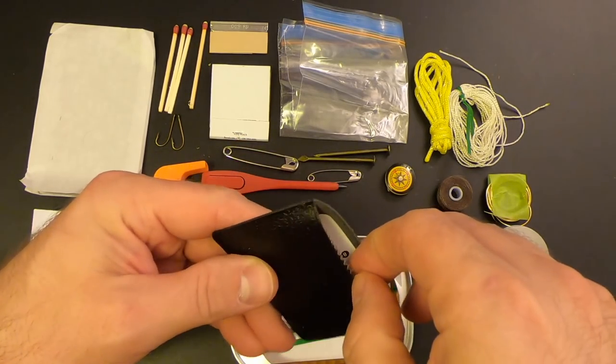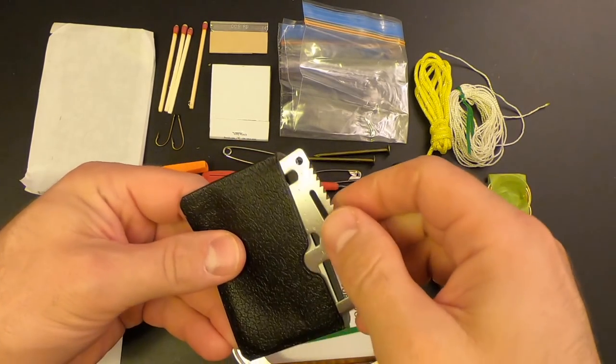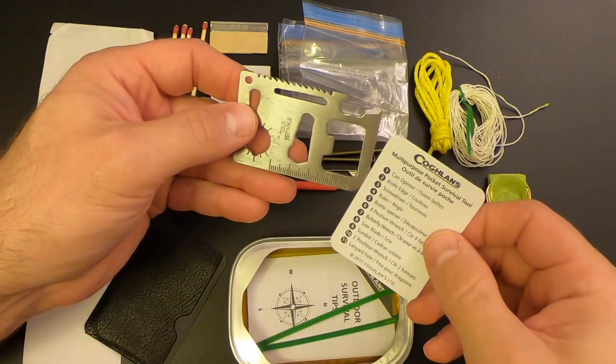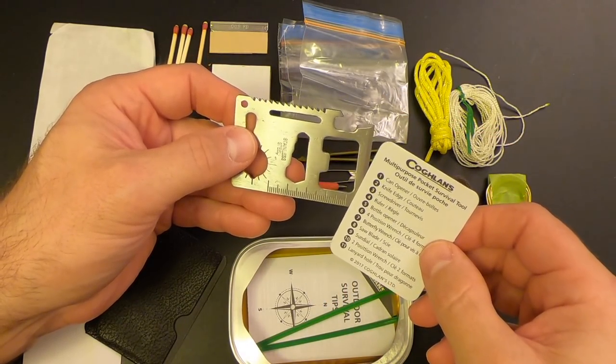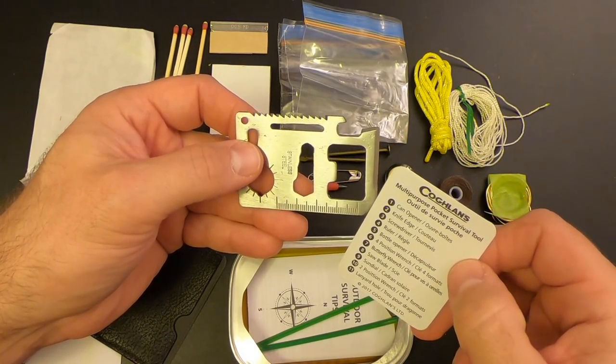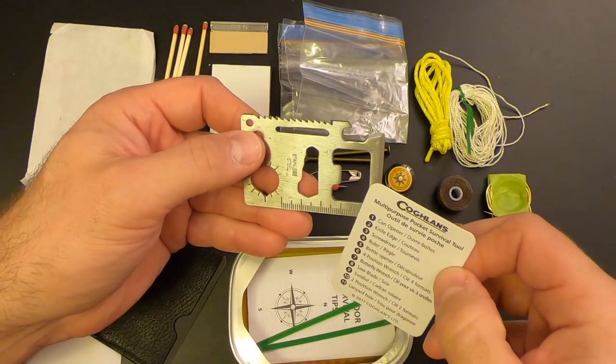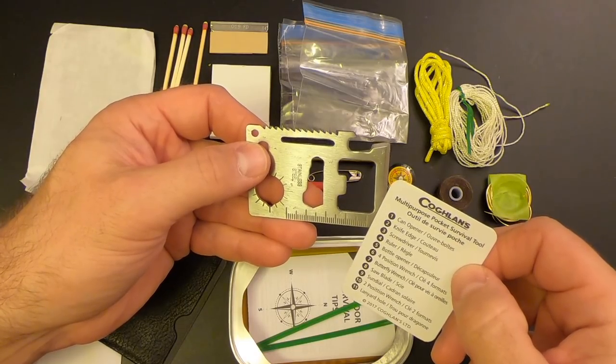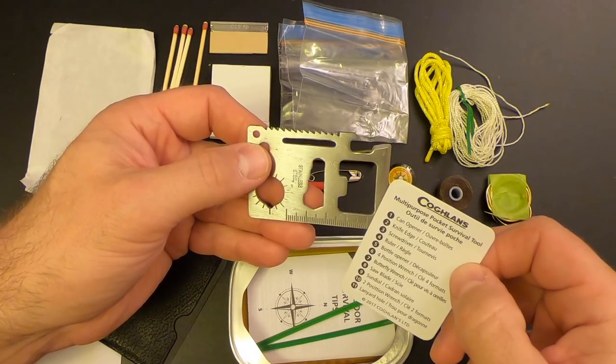Then we've got this little survival tool here. And you've seen these before in a lot of other survival kits. So according to the guide, we've got a can opener, a knife edge, a screwdriver, a ruler, a bottle opener, a four-position wrench, a butterfly wrench, a saw blade, a sundial, a two-position wrench, and a lanyard hole. So, you know, this is very basic. You see these in a lot of inexpensive survival kits, but it's not horrible.